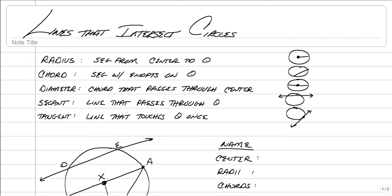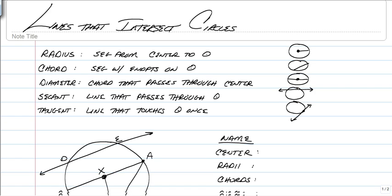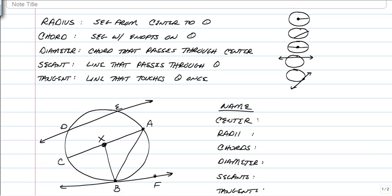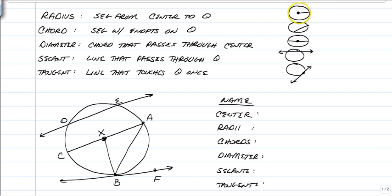Some of the basic parts of a circle: We have a radius. A radius is a segment that's from the center of the circle to some point on the circle. A chord is a segment that has both endpoints on the circle. A diameter is a special kind of chord. Both endpoints are on the circle, but it must pass through the center. A chord does not have to pass through the center.